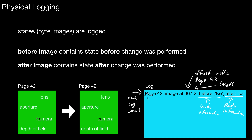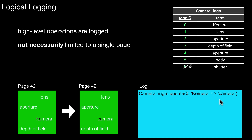That is all the information we have. Notice that this is with respect to a particular page and on that page with respect to a particular offset. You typically keep a byte sequence — the byte image as of before and as of after the change. Another extreme in logging is called logical logging. That's a high-level logging, and here you don't keep a log entry with respect to pages, but typically on a higher level.